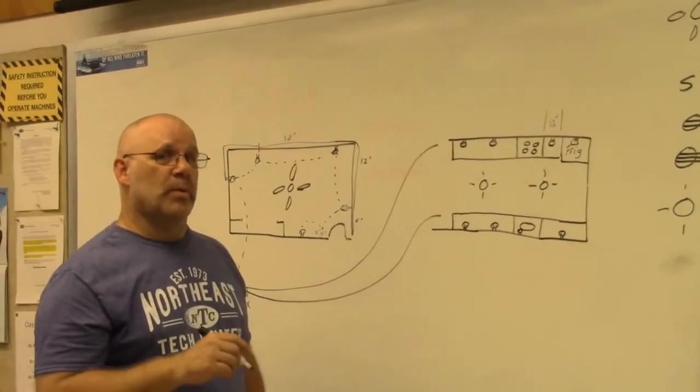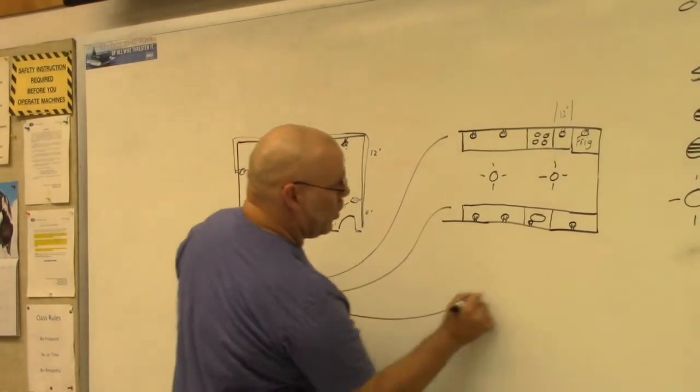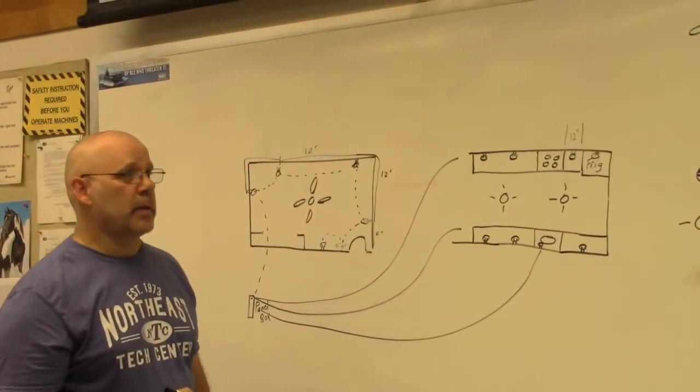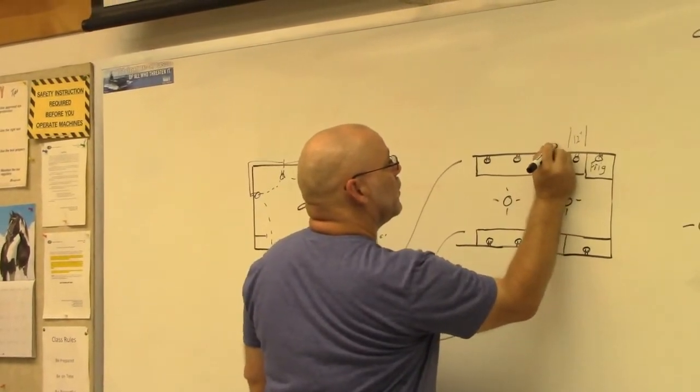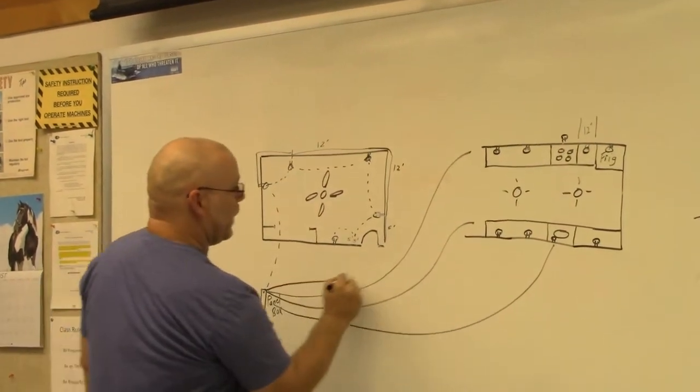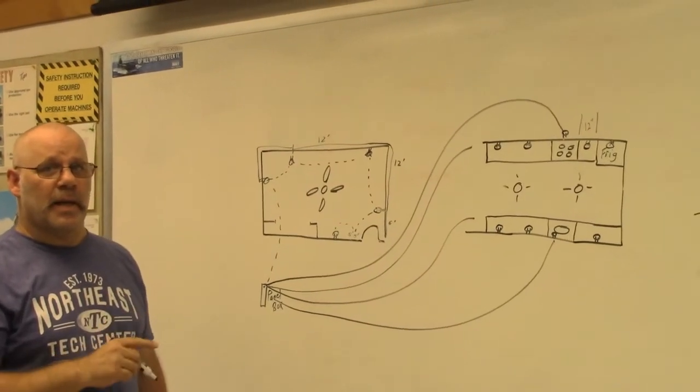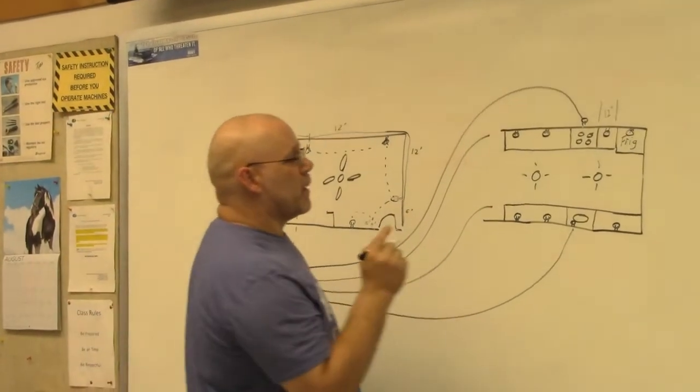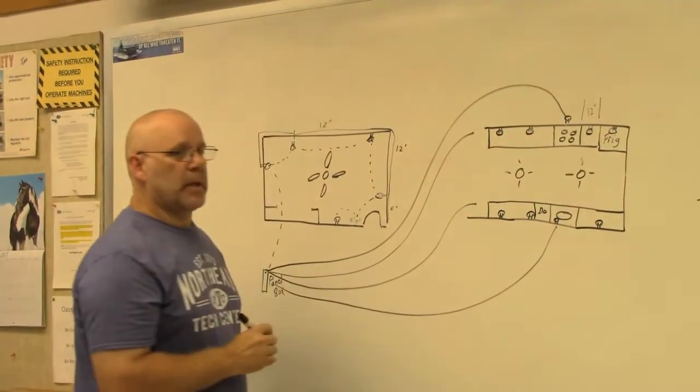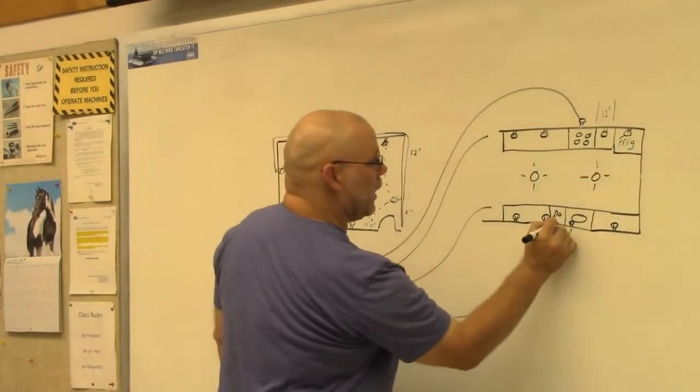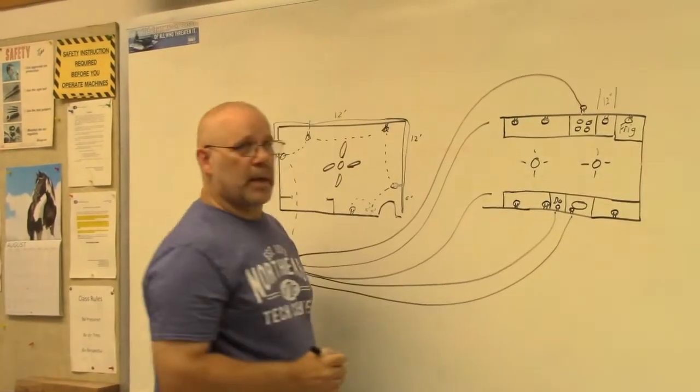But a disposal is a dedicated circuit, which means it has to have its own home run. If I have a microwave above my stove, it has to have its own home run. That is a dedicated circuit. If, let's say I have a dishwasher next to my sink, it would get an outlet with a dedicated circuit.